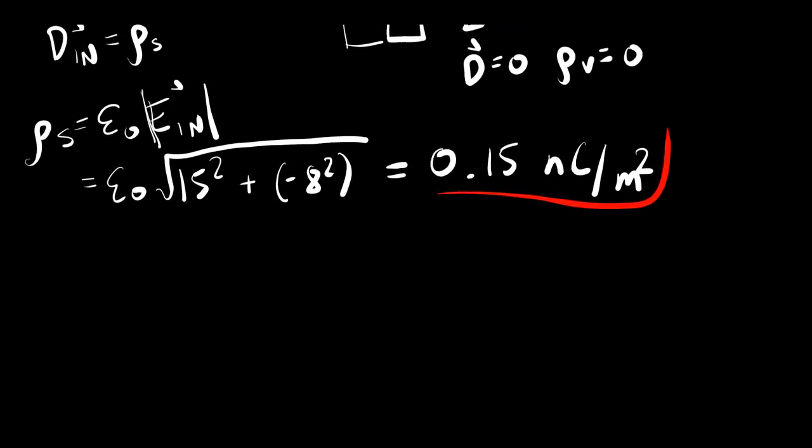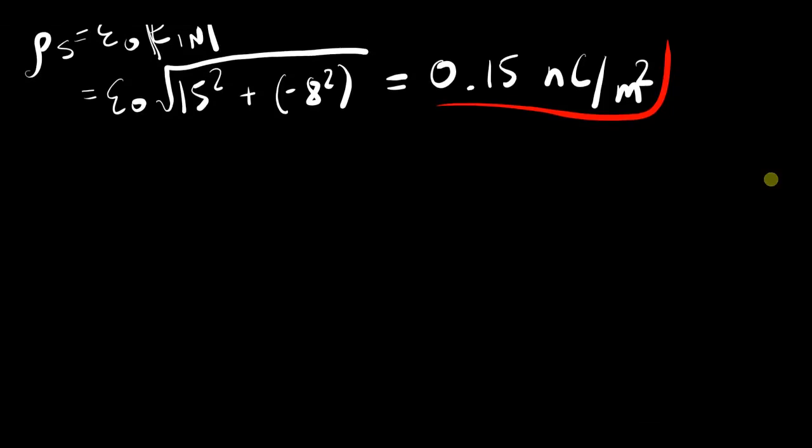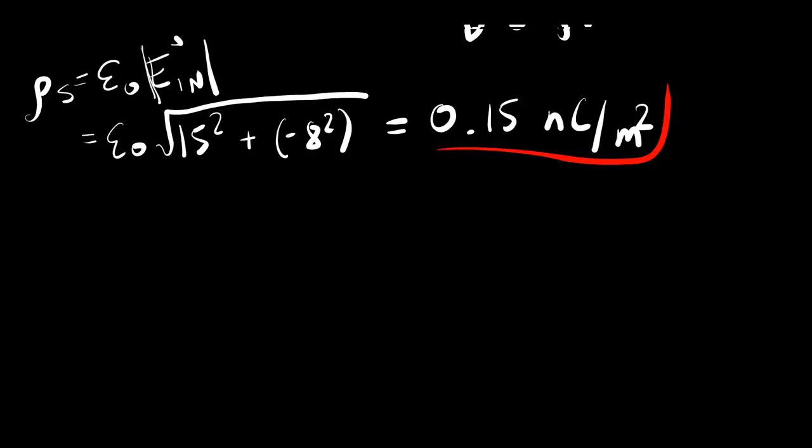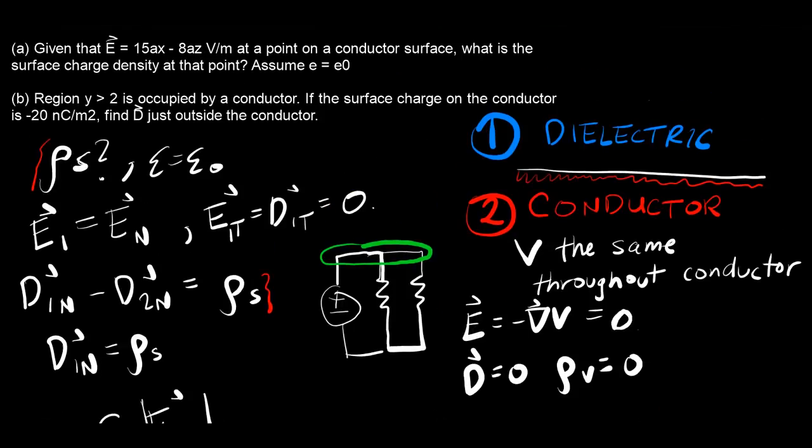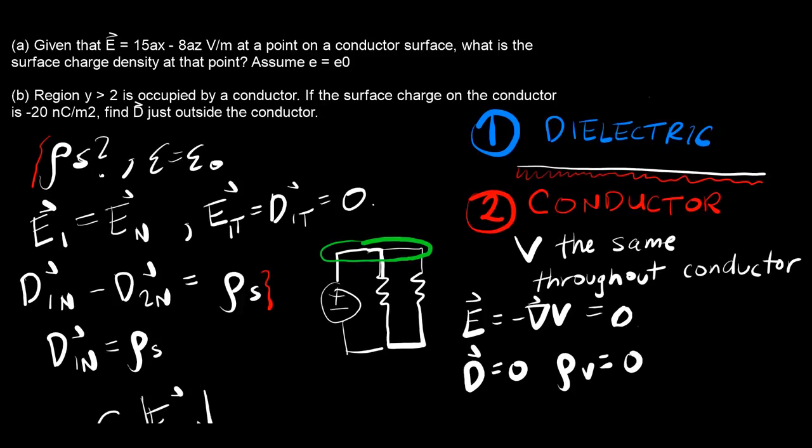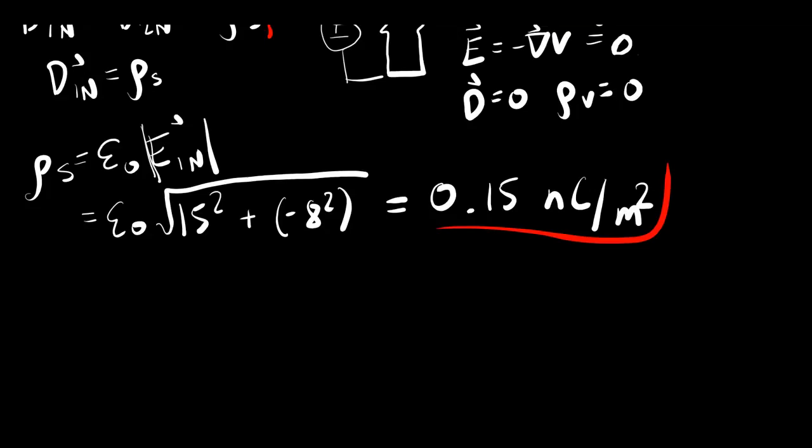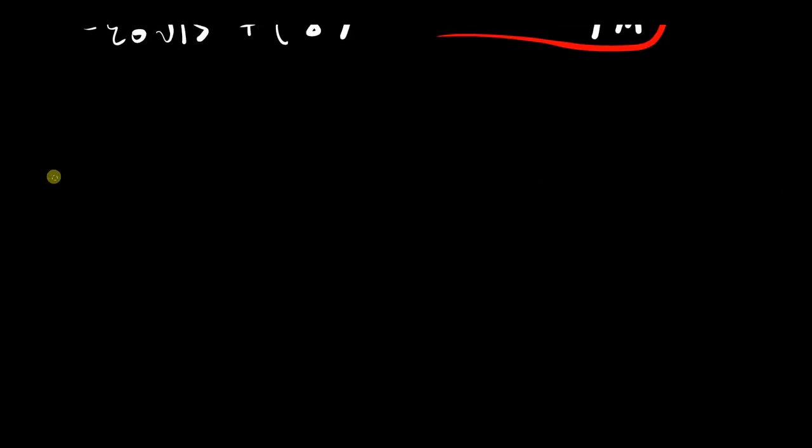So then for the second part of the question, it tells you that region y greater than 2 is occupied by a conductor. If the surface charge in the conductor is that, then you want to find the flux density just outside. So let's draw another region here. Let's say this is y equals 2, and they said when y is greater than 2, then you are hitting a conductor.